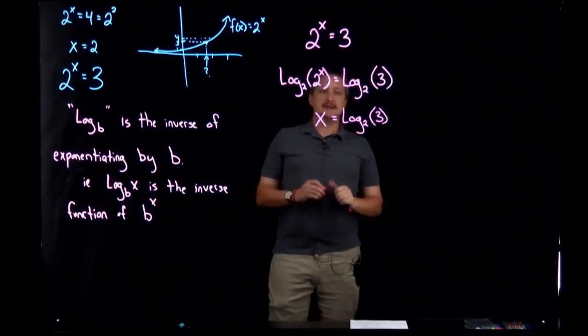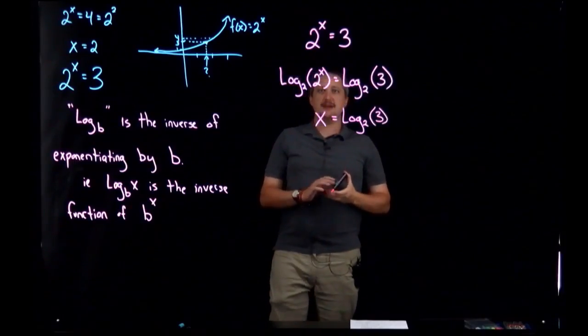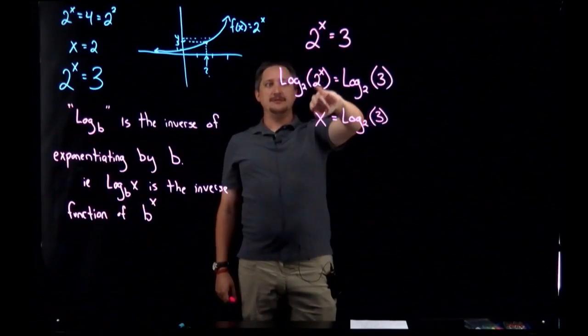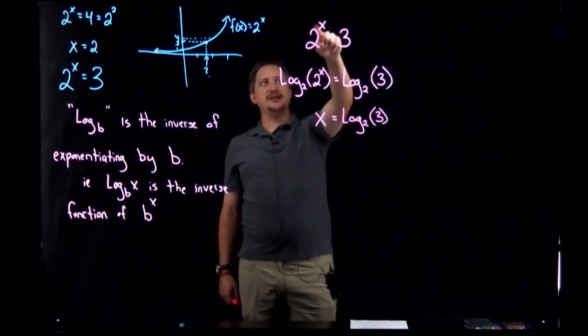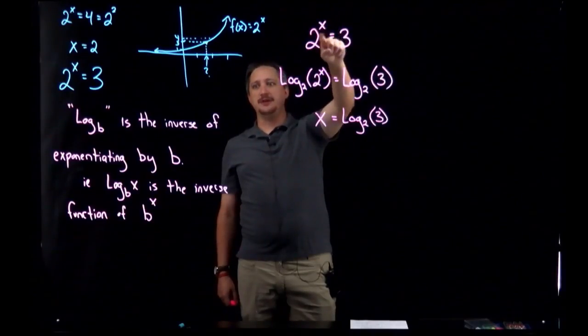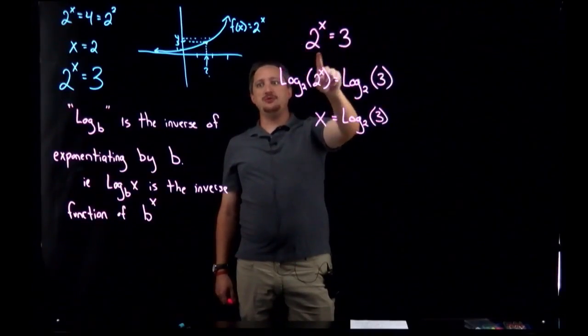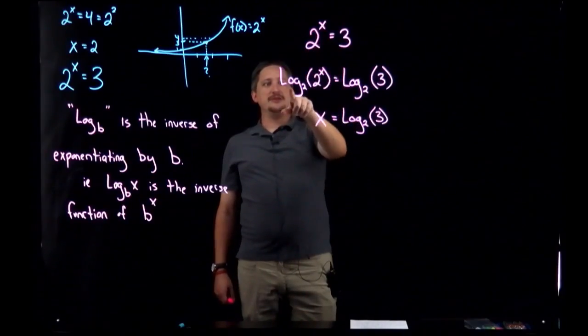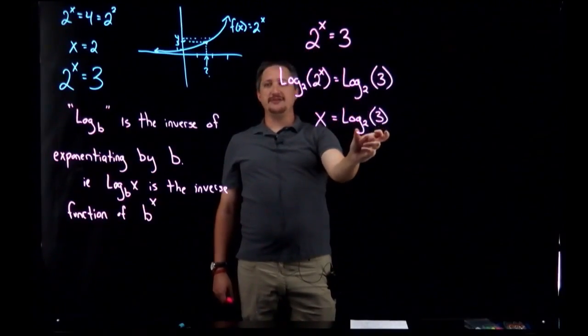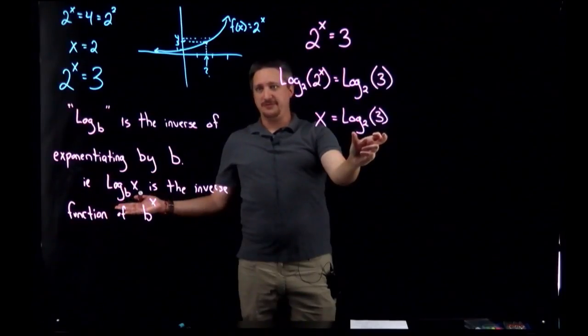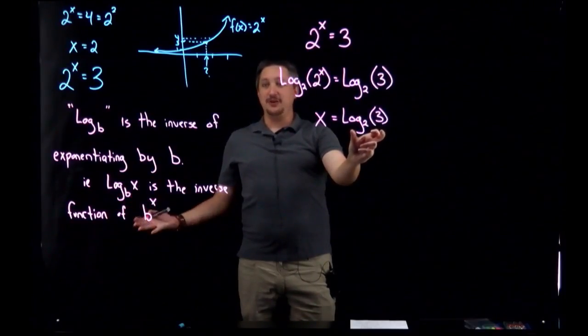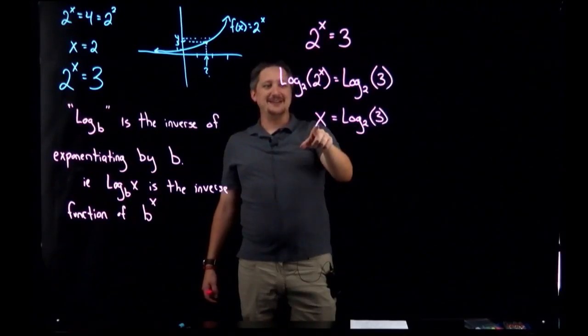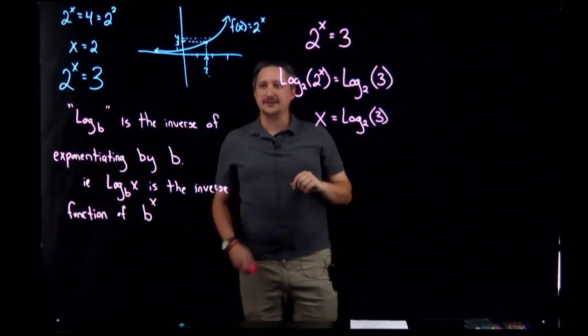The whole idea here is that we can take log, and the log's base should match the base of the piece I'm trying to get rid of. I'm trying to get to the exponent, so I take log base 2 because I have a base 2 exponential function. This is some number - it's kind of an annoying number, not a nice number, but it's a number nonetheless, and I can solve for x.